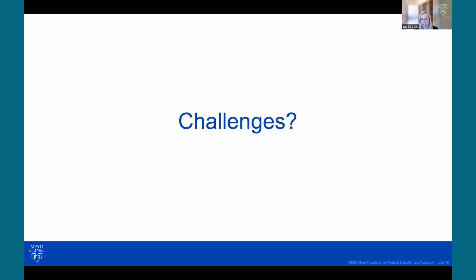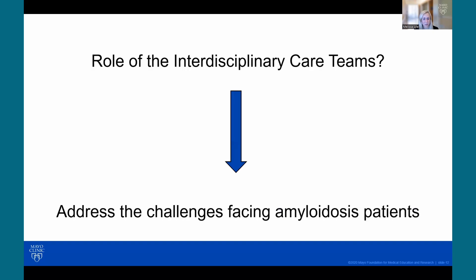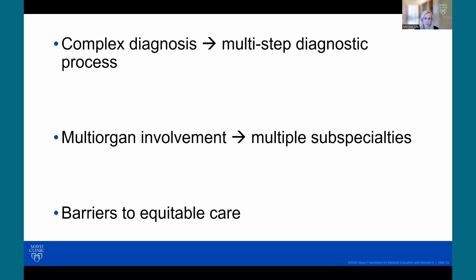What are some of the challenges faced by interdisciplinary care teams? Three of the biggest challenges identified are: the complex diagnosis — it's a multi-step process to get to the diagnosis; multi-organ involvement, particularly extra-cardiac manifestations which require multiple subspecialties; and barriers to equitable care. The role of the interdisciplinary care team is really to address all of those challenges facing amyloidosis patients.